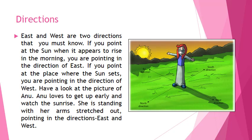Directions: East and west are two directions that you must know. If you point at the sun when it appears to rise in the morning, you are pointing in the direction of east. If you point at the place where the sun sets, you are pointing in the direction of west. Have a look at the picture of Anu. Anu loves to get up early and watch the sunrise. She is standing with her arms stretched out, pointing in the directions east and west.